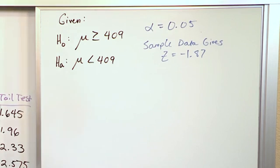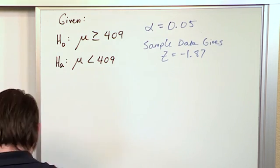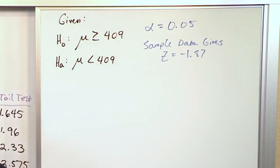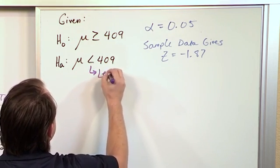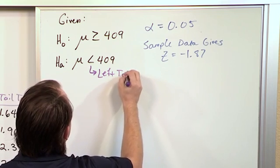All right. Now, as always, the very first thing to do is note that the alternate hypothesis is a left arrow. So this is a left tail test. That's the first thing you always look at.